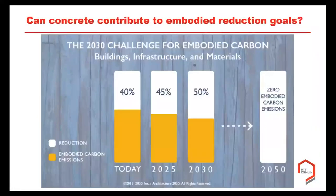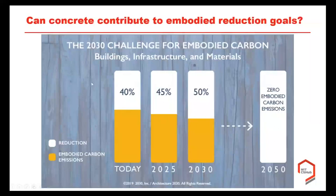The Architecture 2030 Challenge asks: can we reduce the embodied environmental impacts of our building materials by 40% today, 45% by 2025, 50% by 2030, and eventually reach zero embodied carbon emissions? Structural engineers have a similar challenge. We've been talking a lot about net-zero energy consumption in buildings operationally — the question is, can we also do that for our materials? What does it even mean to have zero embodied carbon emissions?